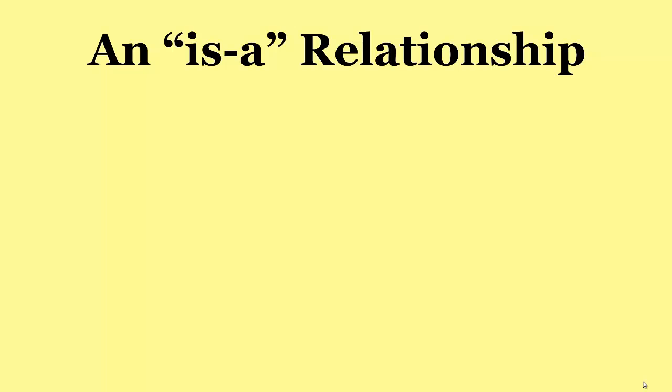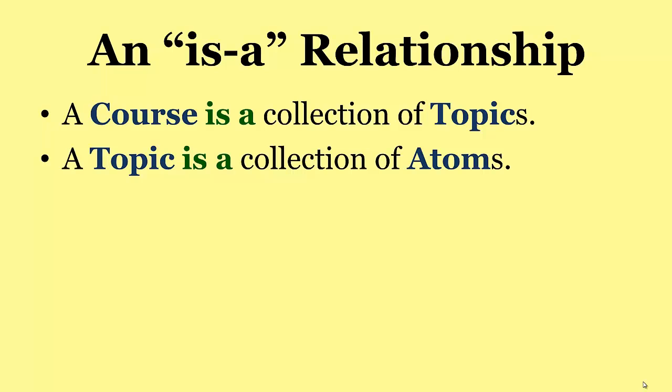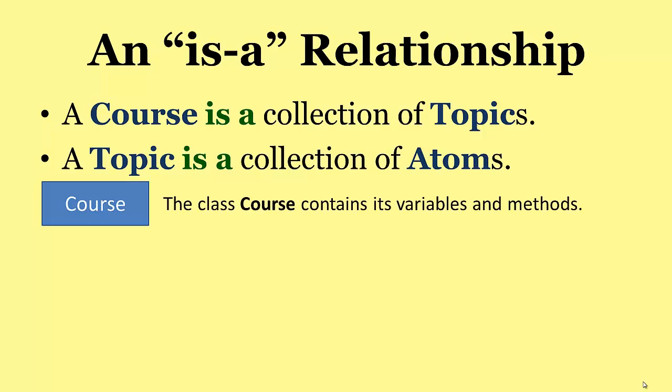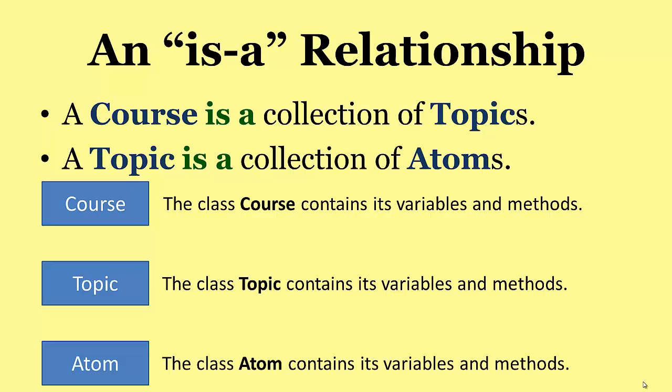All these classes can be linked in something called an IS-A relationship. There are three kinds of relationship. An IS-A is by far the most common. A course is a collection of topics. A topic is a collection of atoms. So we have a class, course, and course contains all its variables and methods. I haven't got room to show you the variables and methods here, but I'm sure you can work all those out for yourself. Then we have the class, topic, which contains its variables and methods. And finally for this one, we have the class, atom, containing its variables and methods.